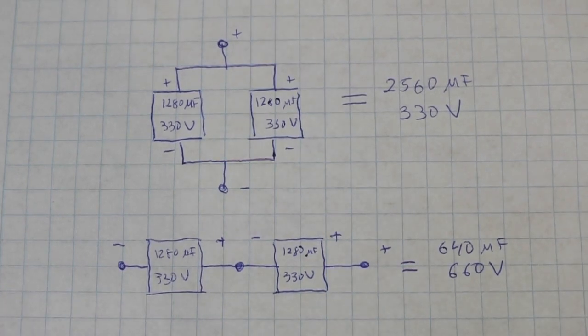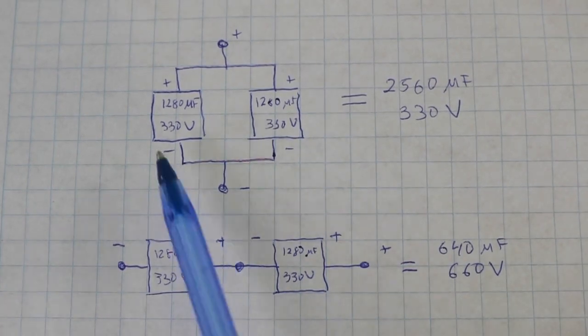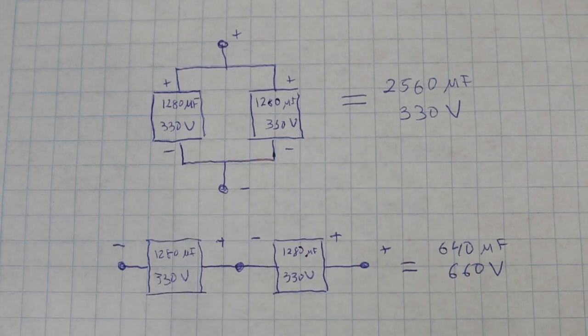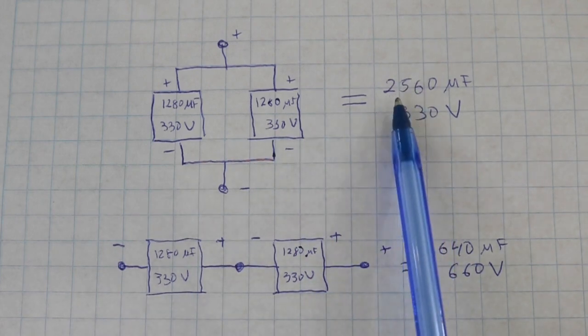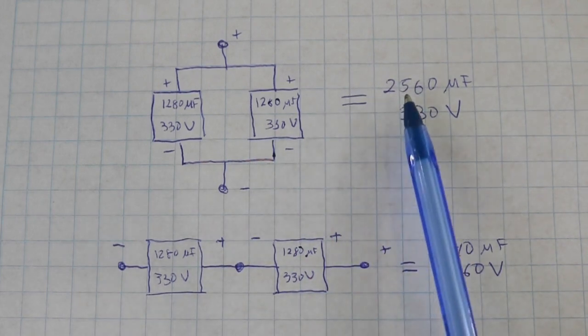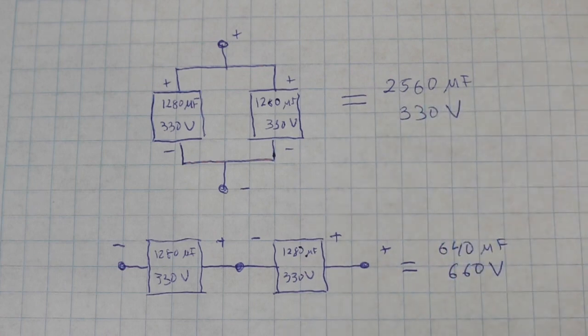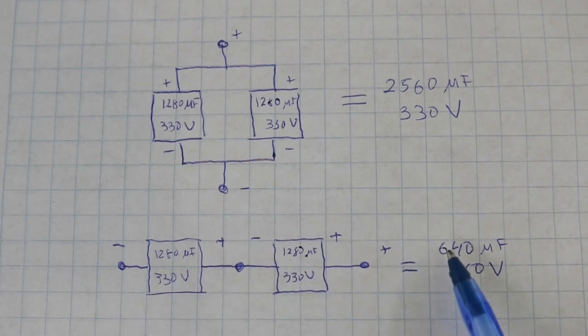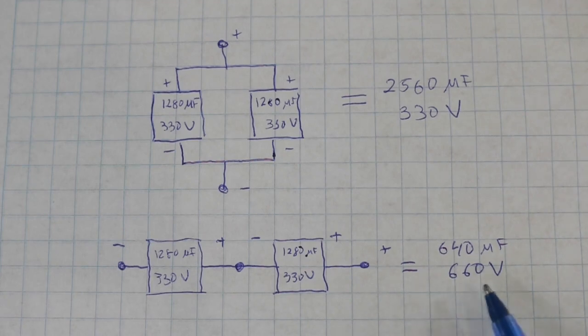For example, you can connect two of the groups in parallel and you will double the capacitance for a total of 2560 microfarads with the same voltage, 330 volts. But if you connect two of the groups in series, then you have half the capacitance, 640 microfarads, but double the voltage, 660 volts.